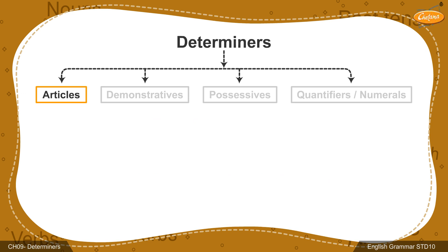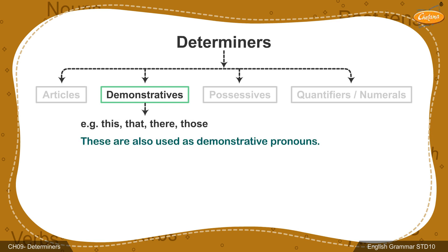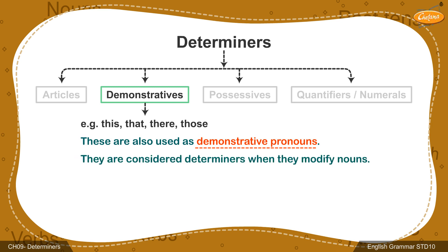Next, we move on to the second type, that is demonstratives. There are four demonstrative determiners in English which include this, that, these and those. These determiners are also used as demonstrative pronouns. However, they become determiners once they are followed by a noun in a sentence.